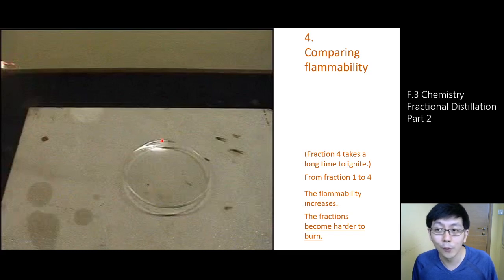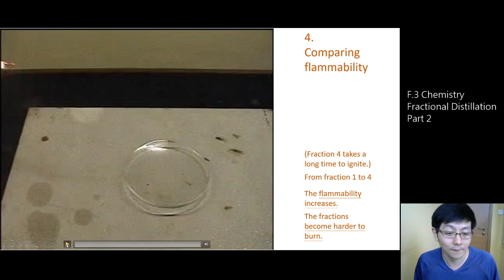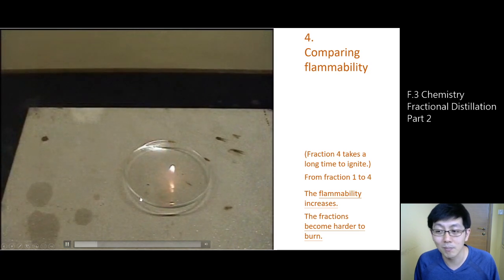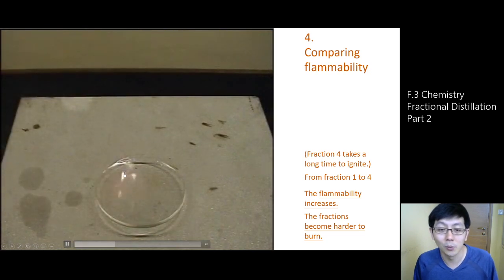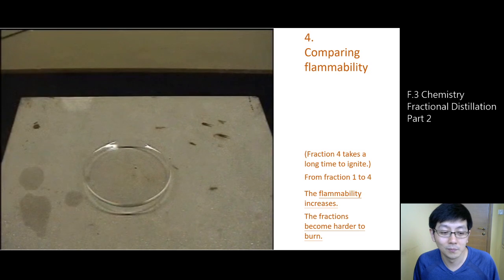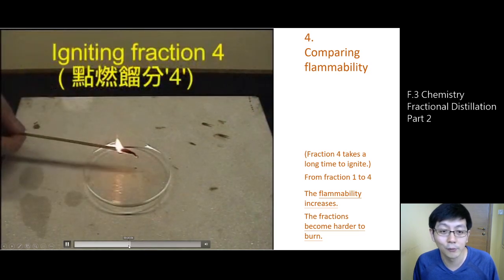Number four: flammability. For fraction 1, if you use a burning splint and put it near the fraction, it burns immediately. Fraction 2 shows a similar observation — place the burning splint close to it and it burns immediately. However, for fraction 4, it does not burn — if you use a burning splint to touch it, it does not catch fire immediately.